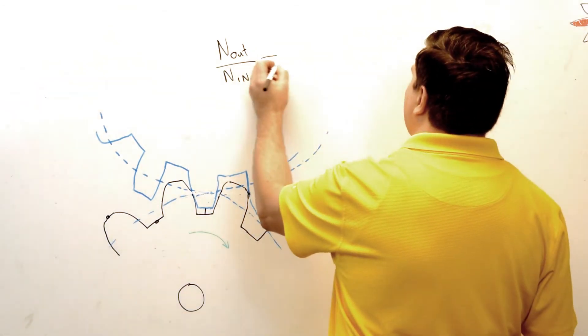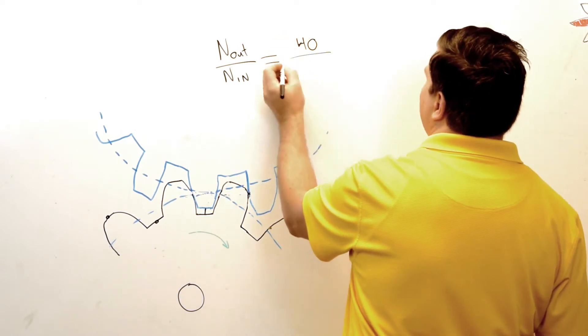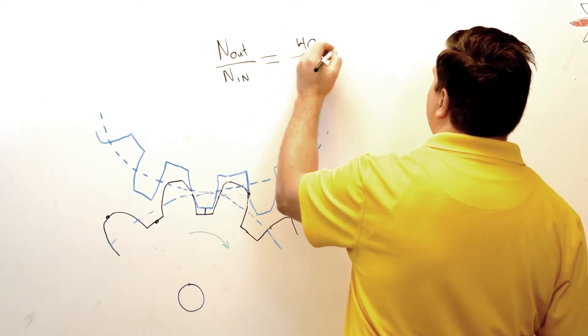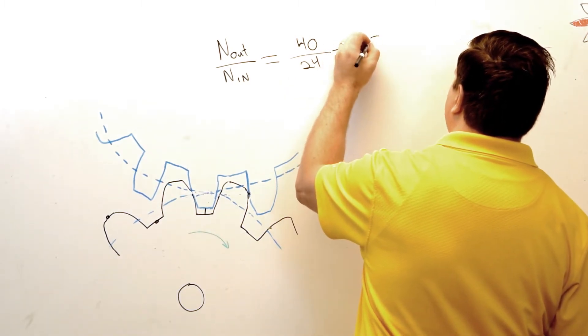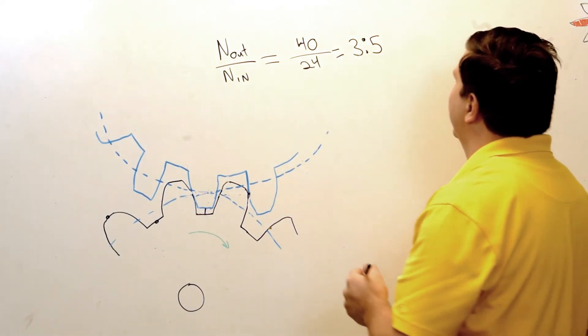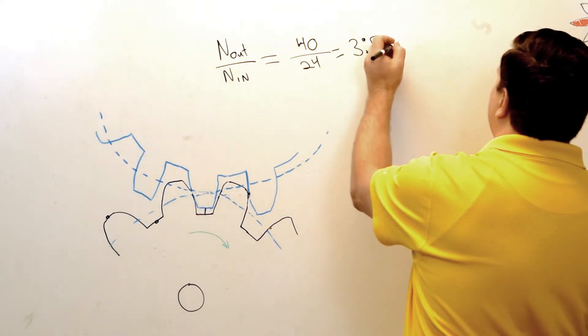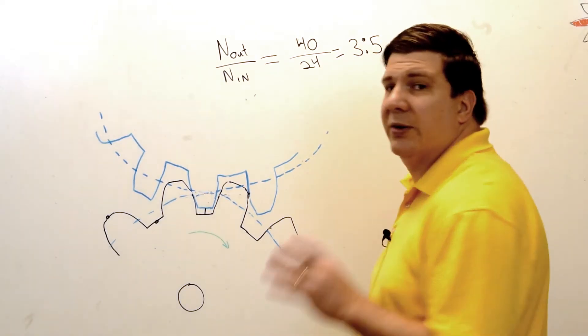So in this case, I'm going to drive the 40 tooth gear by the 24 tooth gear. And that gives us a ratio of 40 to 24, or 3 to 5. So I can divide both of those by 8. And I will get 1.66.